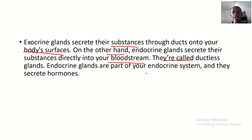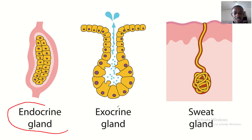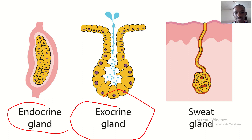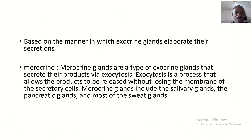In this lecture we'll be talking specifically about exocrine glands. An example of an exocrine gland is the sweat gland, where secretion is directed outward. So in this lecture we'll be focusing on the exocrine glands.